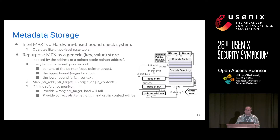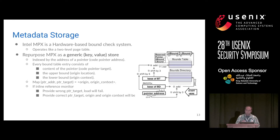Now we can talk about the metadata tables. We use Intel MPX — we actually repurpose the uses of the MPX table. In the MPX table, we give two addresses: the pointer address and what the pointer targets to. Using these two addresses, we can create a pair and have two different cells in the bounds table — one for storing the lower bound and one for the upper bound. We use the lower bound and upper bound to actually store the origin and origin context. So we created a pair for the pointer address and pointer target and stored the origin and origin context on that pair.